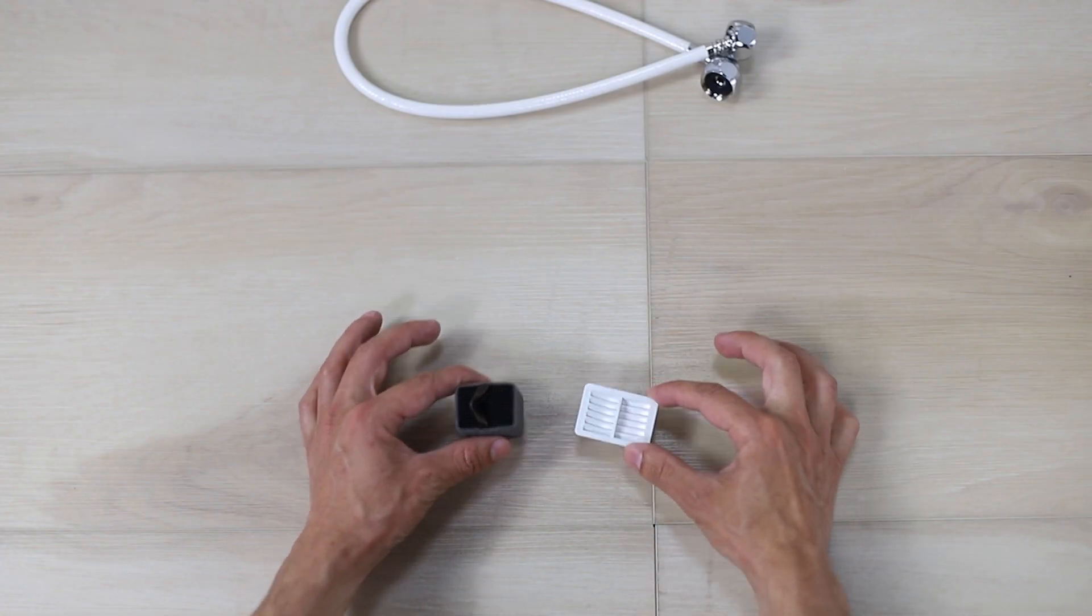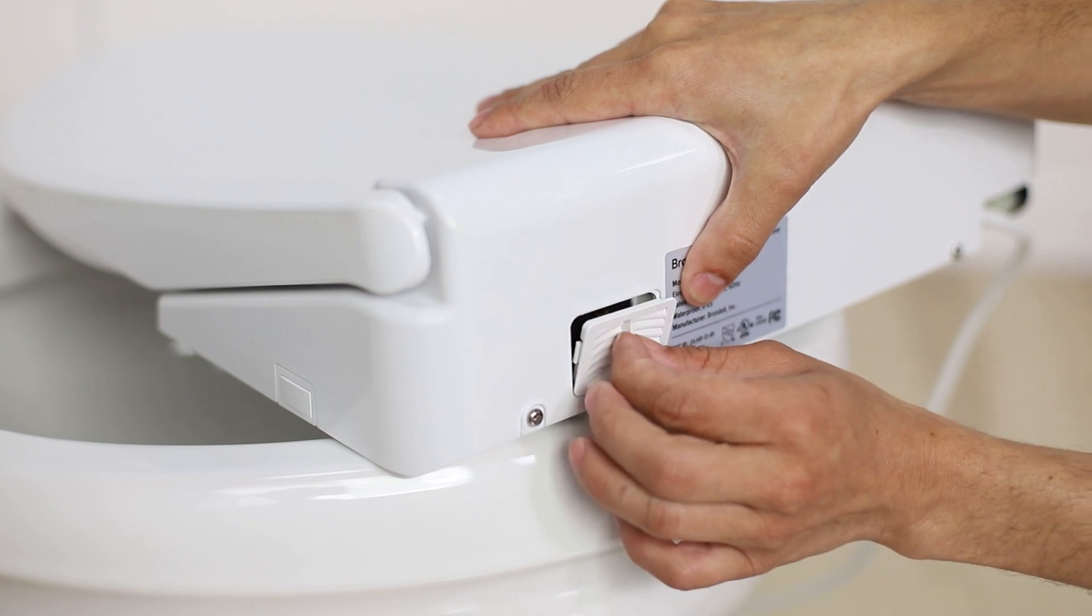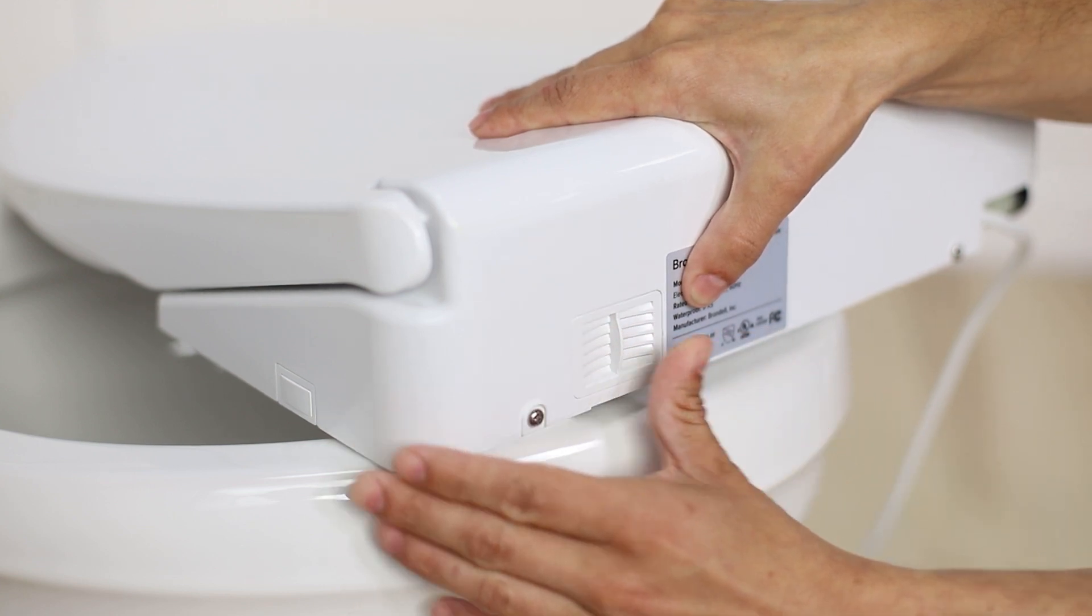Insert the deodorizer cartridge into the back of the bidet body and attach the deodorizer cover until it snaps into place.